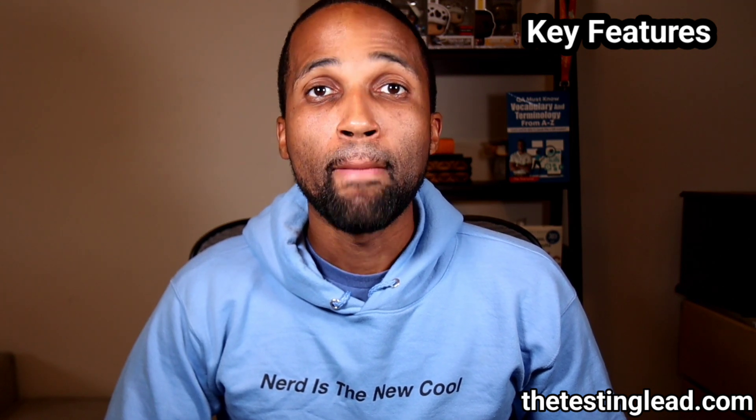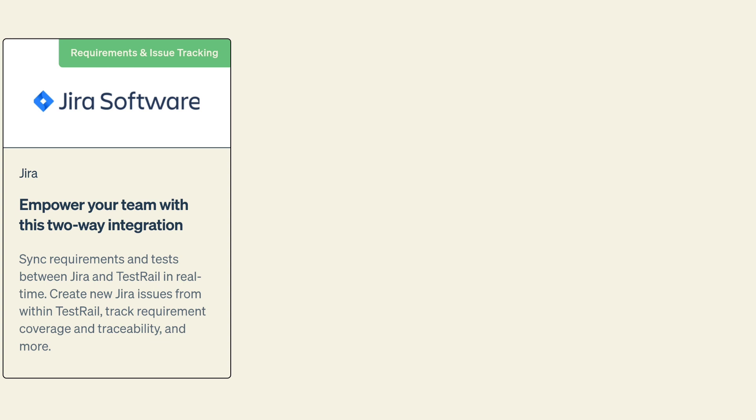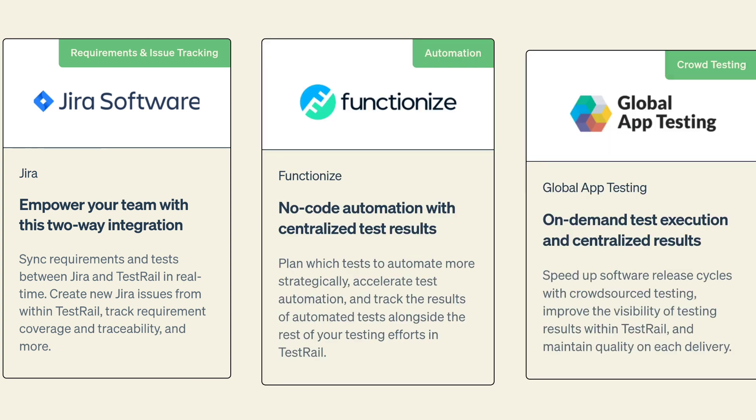Next, we have integration. TestRail is mainly for test management, but it integrates with project management tools as well as bug management tools. That way you can integrate it, let's say, with Jira. This integration streamlines the workflow by allowing developers and testers to link test cases and test runs with specific issues or user stories.